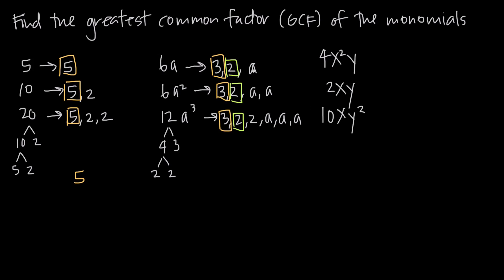Moving to a, we notice that we have a common factor of a in all three monomials. But we don't have a second common factor of a, or a third common factor of a, because even though there's an additional a in 6a squared and 12a cubed, we don't have another factor of a to pull out of 6a. So all we can take is the 3, the 2, and the a. We multiply those together: 3 times 2 is 6, times a is 6a — so the greatest common factor is 6a.